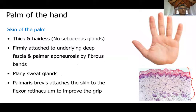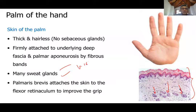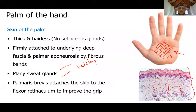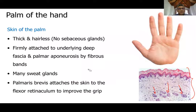In contrast to the absence of sebaceous glands, there are many sweat glands in the skin of the palm. Their watery secretion — in small amounts — actually increases grip. A very small amount of moisture improves grip, though too much sweat reduces it. All these features: absence of sebaceous glands, presence of sweat glands, and the firm attachment of palmar skin to underlying deep fascia, help increase the grip of the hand.